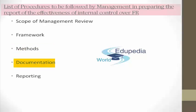Number four: documentation. The design of internal controls and the testing process should provide reasonable assurance for: number one, the evaluation of whether the control is designed to prevent and detect material misstatements or omissions; number two, support for the conclusion that the tests were appropriately planned and performed; and number three, provide support that the results of the tests were appropriately considered. All these things will be documented.